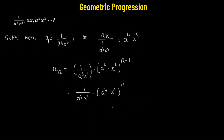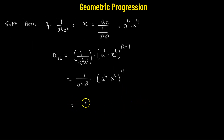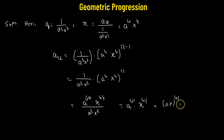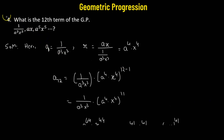Further simplification: a raised to the power of 4 times 11 is 44, and x raised to the power of 4 times 11 is 44, divided by a cubed times x cubed. This gives a raised to the power of 41 times x raised to the power of 41, or simply ax raised to the power of 41 — the 12th term of the given geometric progression.